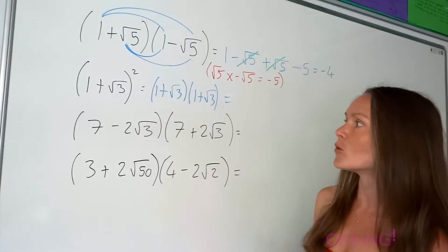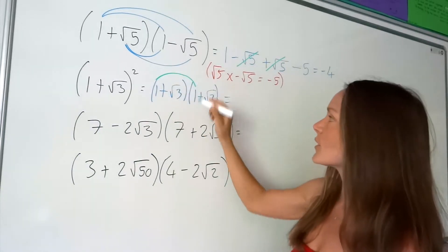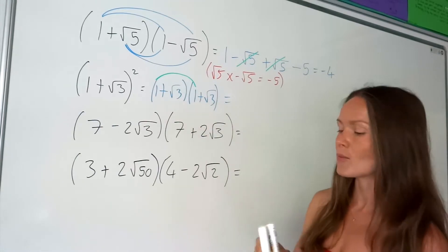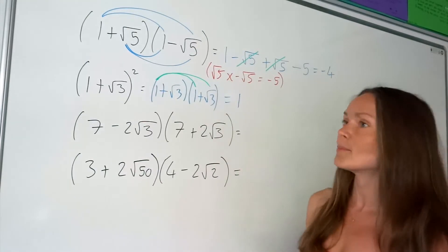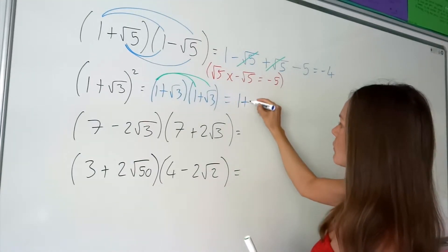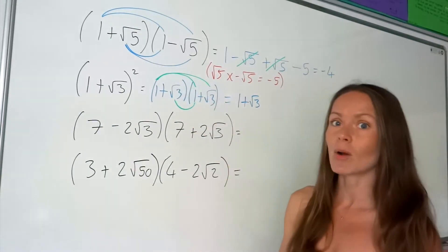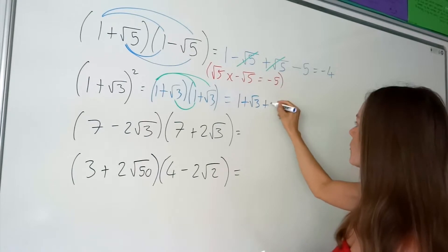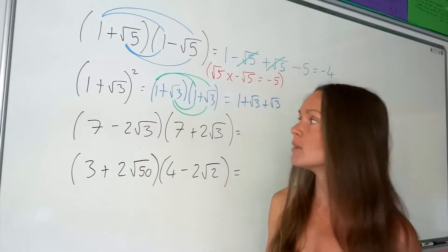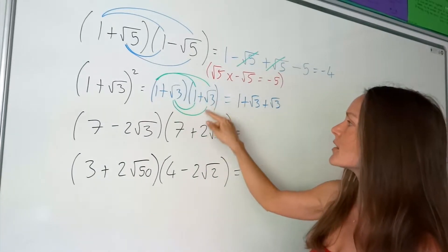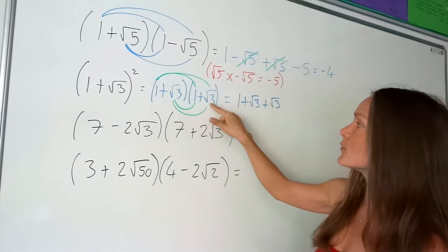And then it's just like before — you're expanding the brackets, multiplying all the terms together. So starting with those two: 1 multiplied by 1 is just 1. Then these two: 1 multiplied by positive root 3, which is just positive root 3. Then another positive root 3 times 1, which is the same thing — positive root 3. And then the last two terms: positive root 3 times positive root 3. When you multiply those together, the square roots cancel each other out and you're left with positive 3.